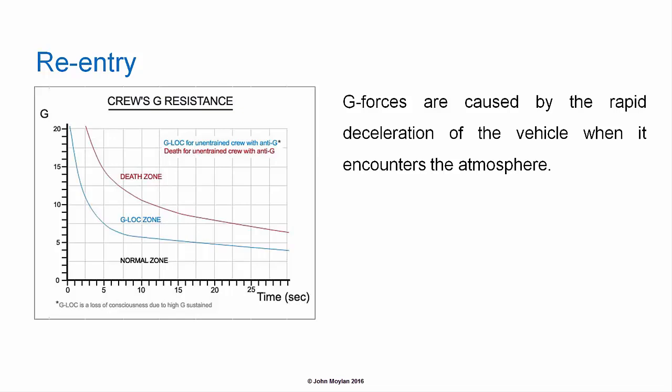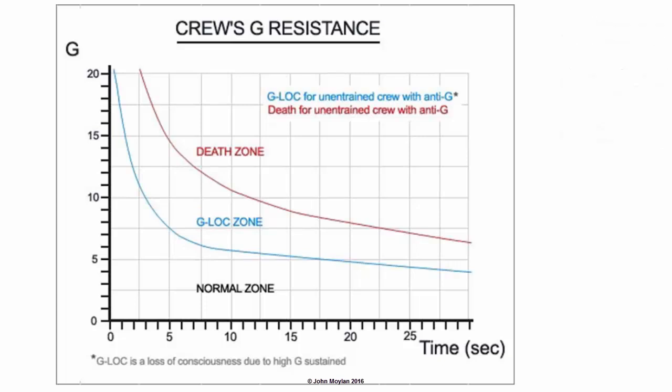G-forces during re-entry are caused by the rapid deceleration of the vehicle when it encounters the atmosphere. A graph shows three zones: the normal zone, the g-lock zone, and the death zone. The death zone is self-explanatory — the crew will die because of the g-forces during re-entry. The g-lock zone is the area in which the crew will be unable to function because of the g-forces and may die for other reasons, such as not being able to control the spacecraft. The normal zone is the desirable range for maximum g-forces during re-entry.